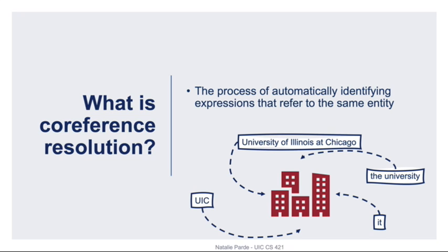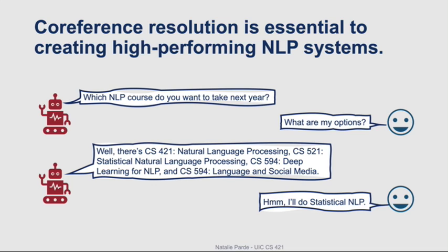Co-reference resolution is the process of automatically identifying which expressions refer to the same entity and grouping them together to facilitate natural language understanding. High-performing co-reference resolution is crucial to developing high-quality NLP systems. Without effective co-reference resolution, a system can only determine that a previously introduced topic or entity is being discussed if it is referenced using exactly the same terms.